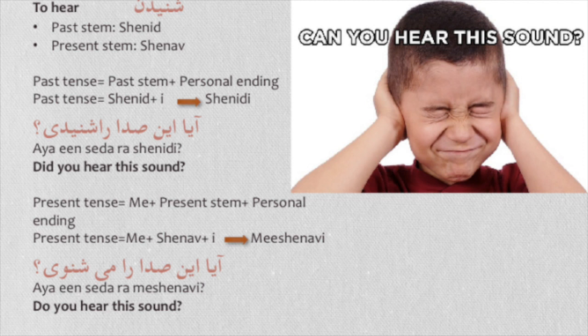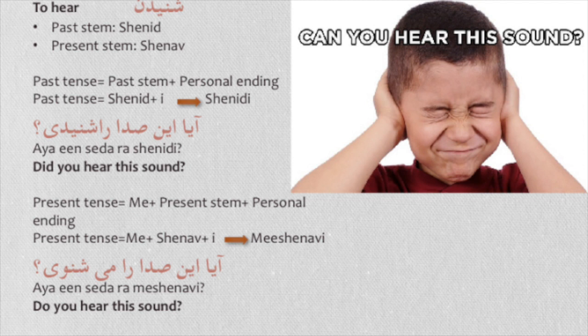The sixth verb is shenidan — to hear. The past stem is 'shenit' and the present stem is 'shenav'. For the past tense, conjugated for you (singular), you need 'i' at the end of the past stem: 'shenidi'. Aya insidara shenidi — did you hear the sound? For the present tense, we need 'me' plus present stem 'shenav' plus 'i': mi shenavi. Aya insidara mi shenavi — do you hear the sound?